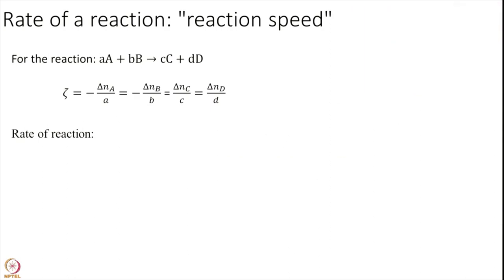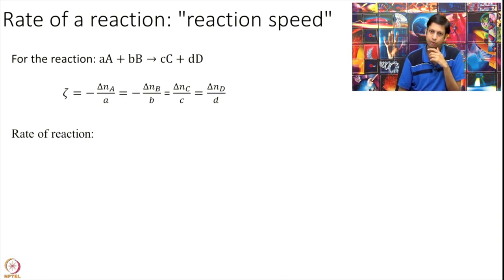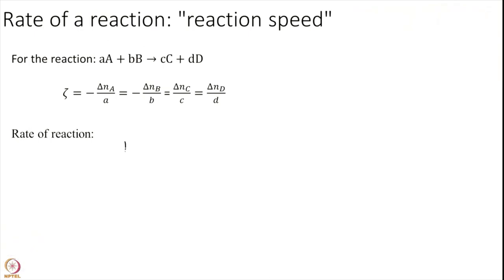So we have defined this extent of reaction. How do we define rate of reaction? The rate is defined to be by definition 1 over volume. I use 3 equal to signs, these 3 lines to define that is a definition. The change of extent of reaction per unit volume. That is defined to be the rate of reaction.